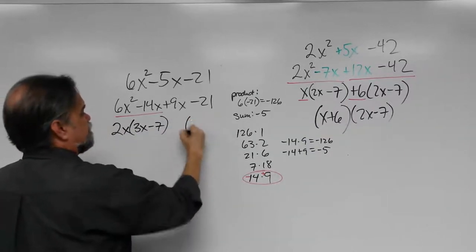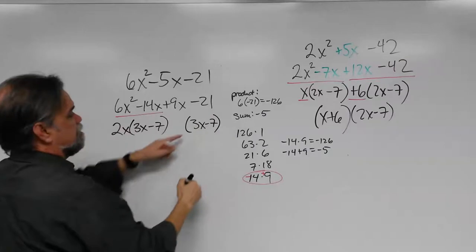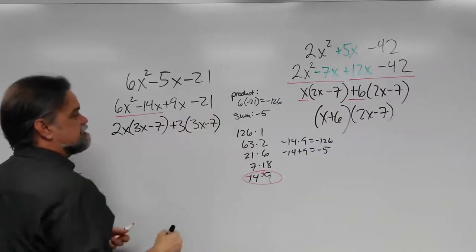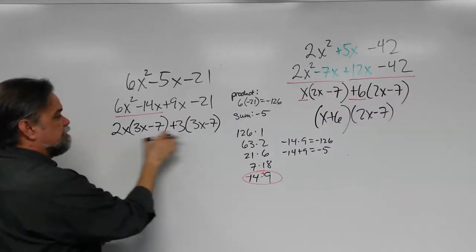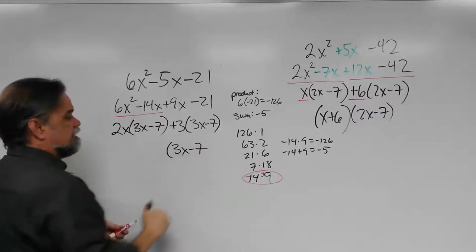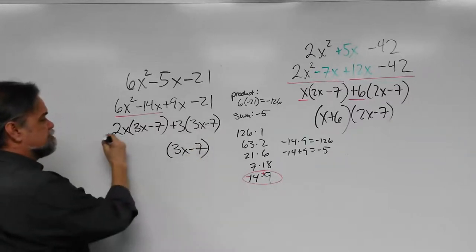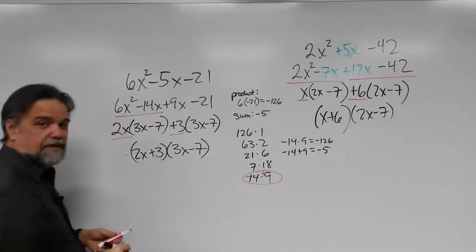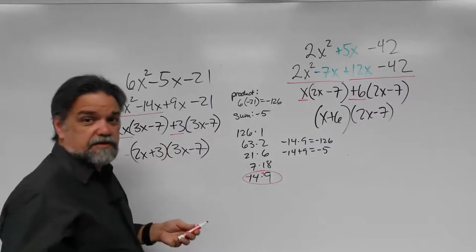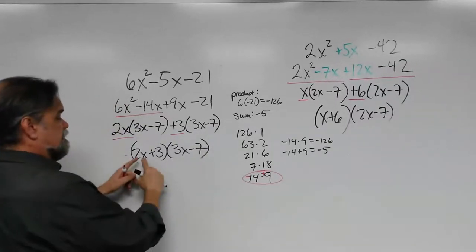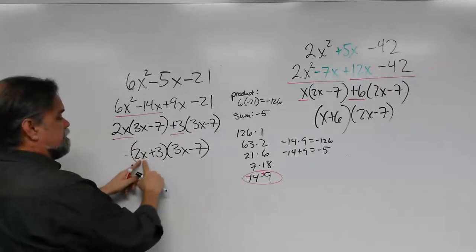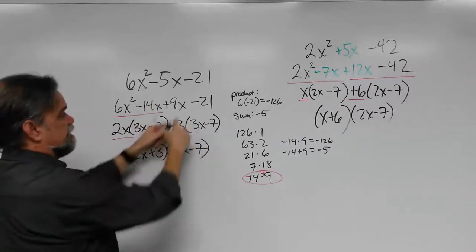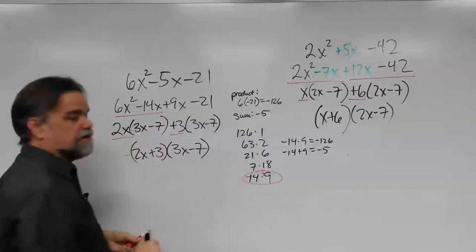So the factors are (3x − 7)(2x + 3). Let's check: 2x times 3x is 6x², 2x times negative 7 is negative 14x, 3 times 3x is 9x, 3 times negative 7 is negative 21. It works!